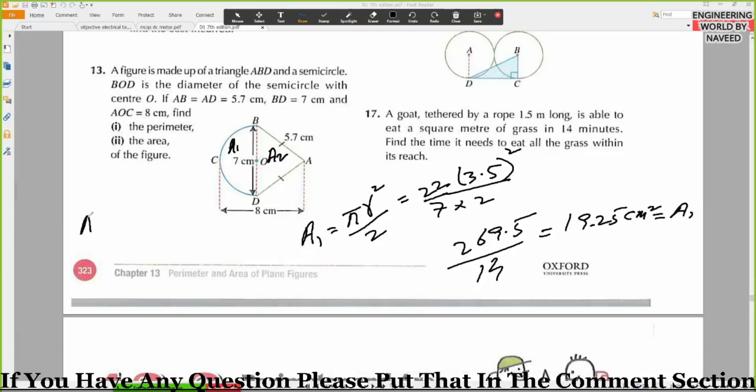What will be A2? Half into base into height. What is base? 8 centimeters. 8 centimeters? Sorry. One second. Height is 5.7. Height or base, don't know? 5.7.